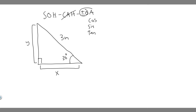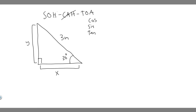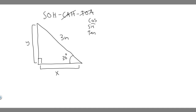We're going to use either tangent or sine. If we choose tangent, we'd use the opposite side and the adjacent side — but we're solving for opposite and we don't know adjacent, so we can't solve with two missing variables. But if you look at sine: opposite is what we're trying to solve for, and the hypotenuse we do know — it's 3 meters. So we're going to use sine.